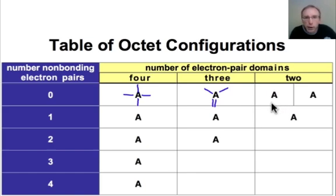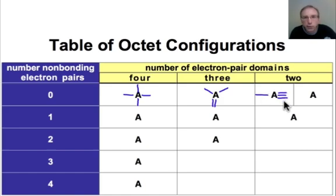There are 2 ways that we can have 2 electron pair domains and produce an octet of electrons. One would be with a triple bond domain and a single bond domain, and the other would be with 2 double bond domains.